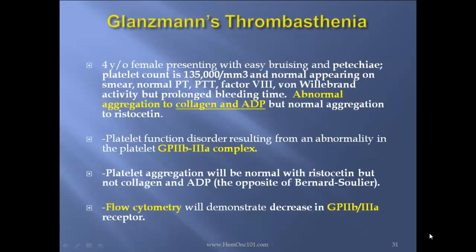Glanzmann's thrombasthenia case report: 4-year-old female presenting with easy bruising and petechiae. Platelet count of 135,000, normal appearing on smear. Normal PT/PTT, factor VIII, and von Willebrand activity. Prolonged bleeding time. Abnormal aggregation to collagen and ADP — the platelet 2B3A — but normal aggregation to ristocetin. This is a platelet function disorder resulting from an abnormality in the platelet 2B3A complex. Remember: Bernard-Soulier is GP1B; Glanzmann's is 2B3A. The opposite of Bernard-Soulier — platelet aggregation is normal with ristocetin but not collagen and ADP. Flow cytometry demonstrates decreased glycoprotein 2B3A receptor.